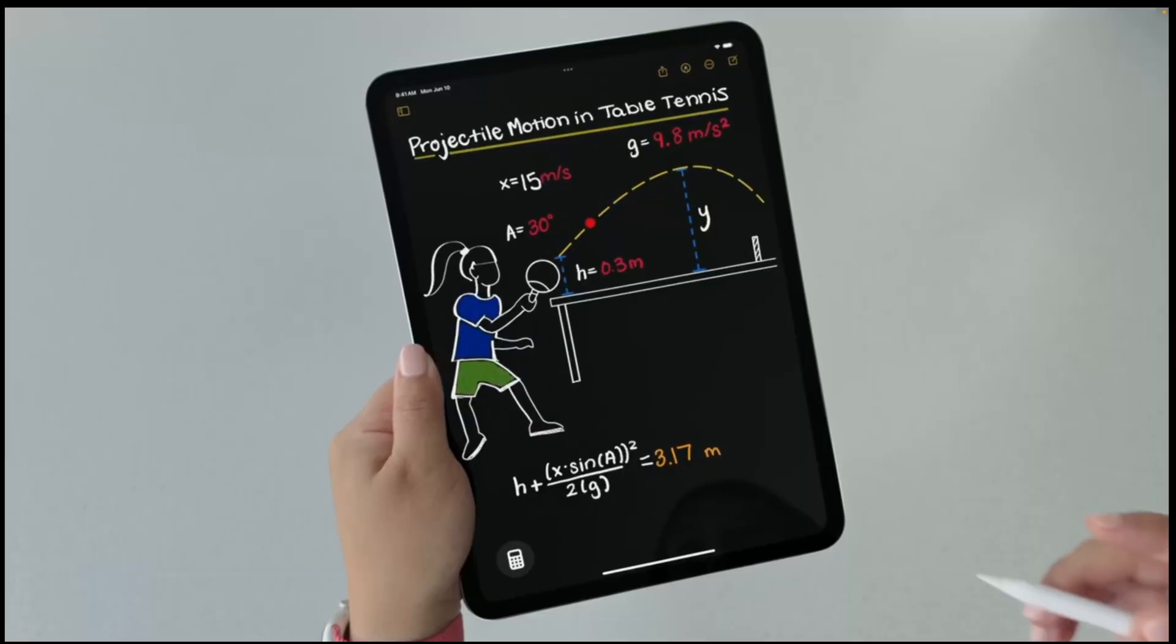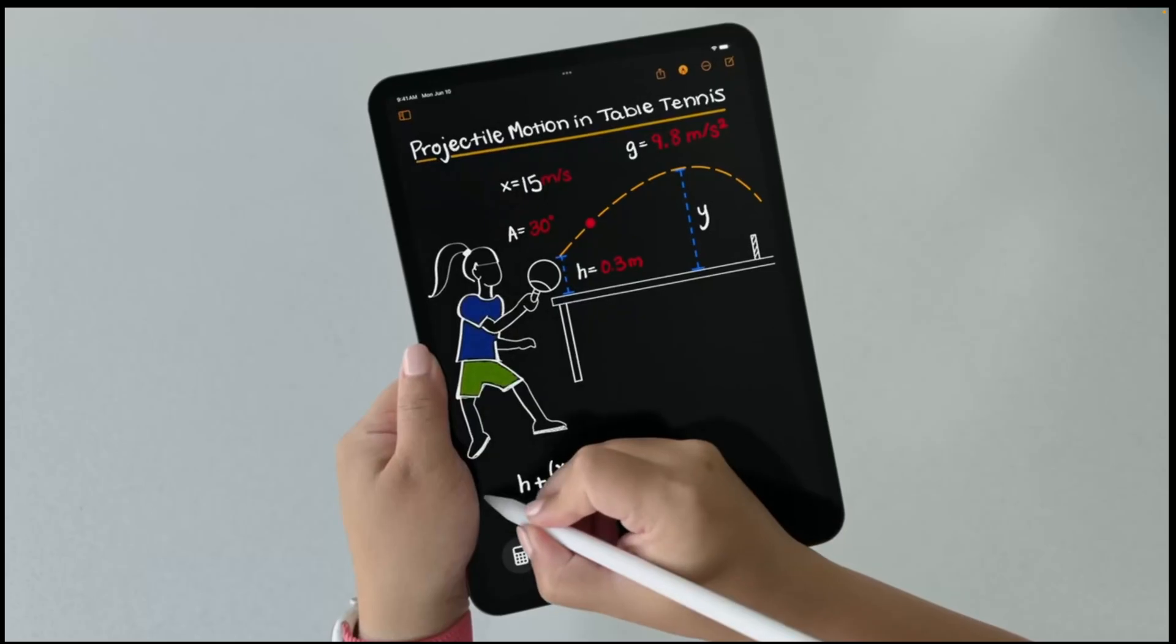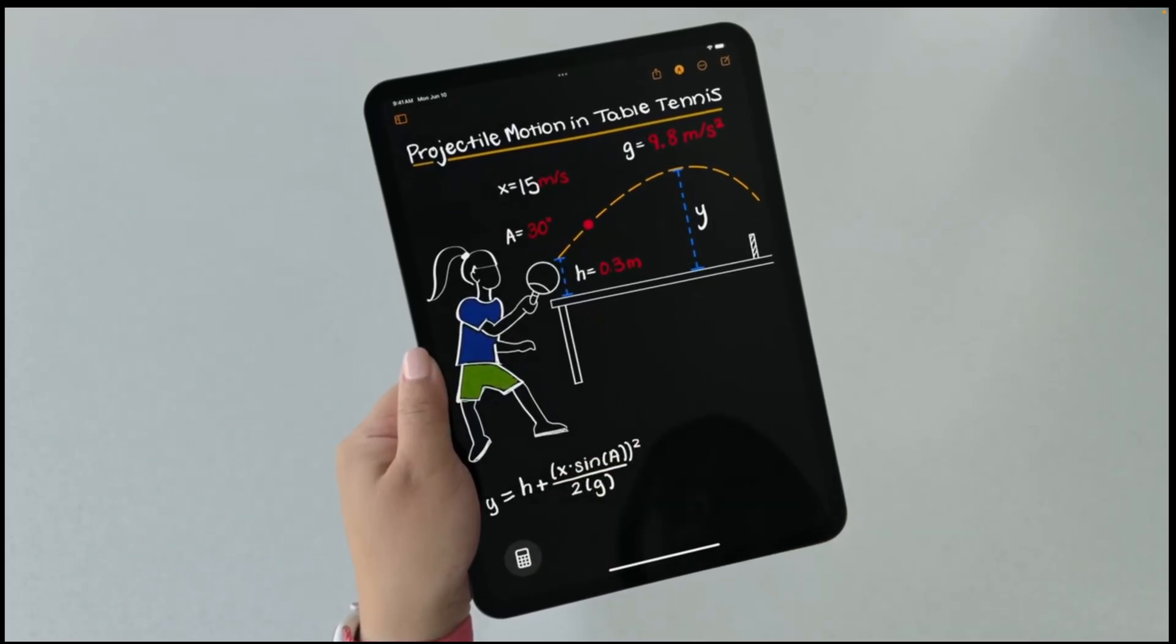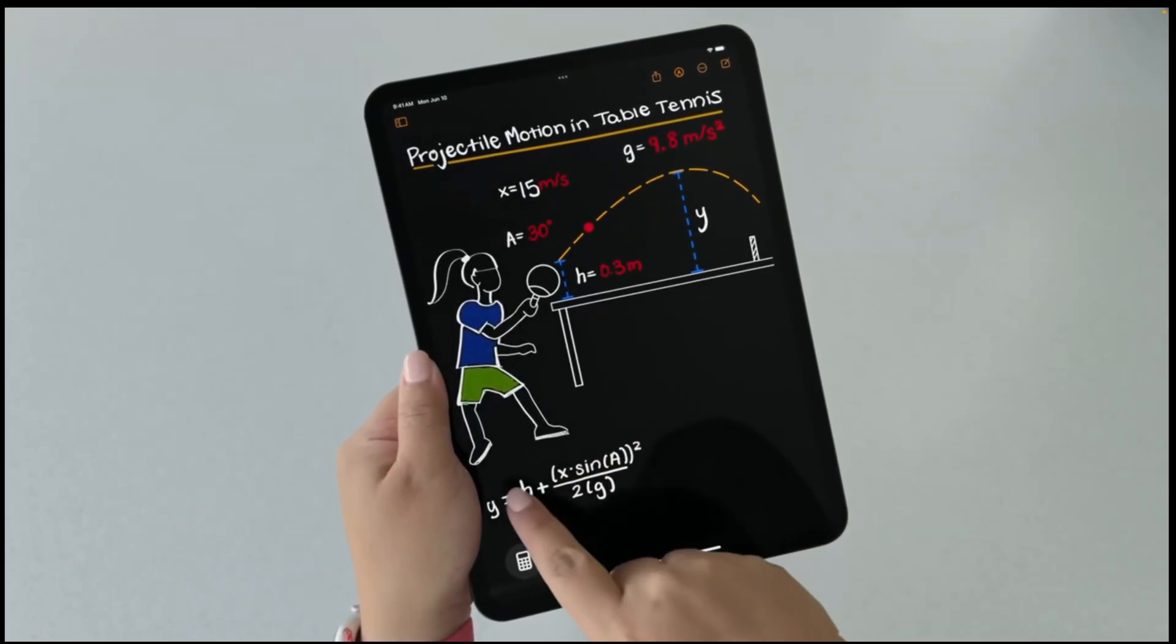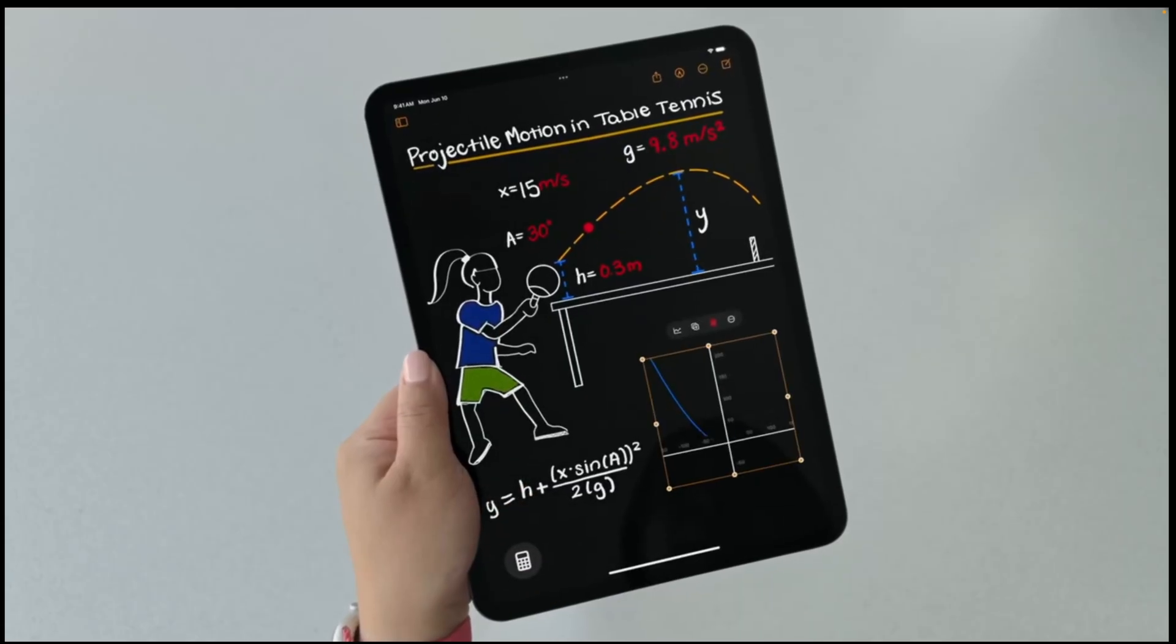And if I want to see how the speed impacts the height visually, I can. I'll just put y equals in front of this equation. And now, when I tap the equals sign, I have an option to create a graph.